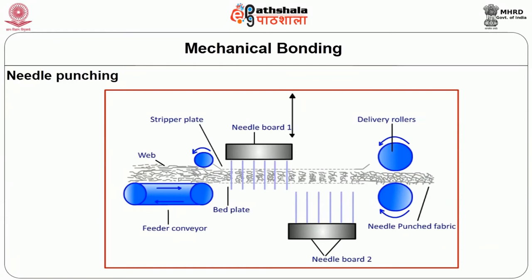From the schematics in the figure showing the operation of the needle punching machine, you can see the loose fibrous web being fed by the conveyor into the needle board. You can see the stripper board, needle board 1, and needle board 2. As the needle board penetrates into the fibrous web, it draws fibers from the top layers into the z-direction, consolidating the web by interlocking fibers across the z-direction. The consolidated material is then delivered from the roller — this is how needle punching is actually carried out.